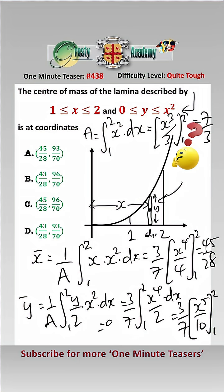And that equals 93 over 70. So we have our 2 coordinates here and that is answer A.